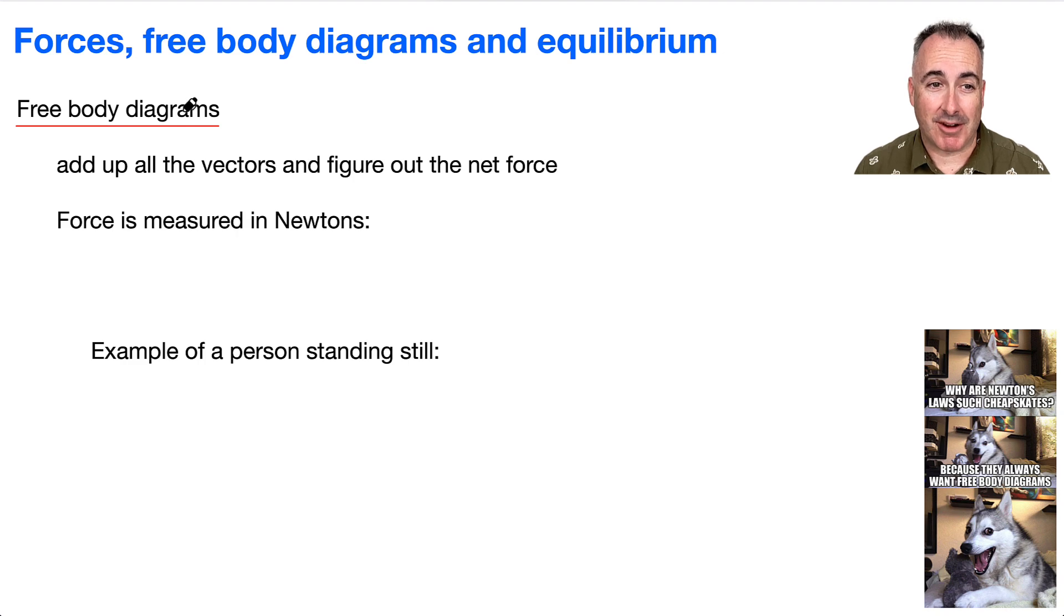So what are these free body diagrams? What that means is you have an object. Let's just say you draw yourself an object like this right here, and you start drawing all the forces acting on it. Maybe there's a force going upwards, a force going downwards, and a force going that way. Then you can use this to figure out what happens.